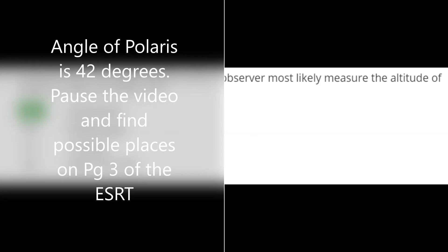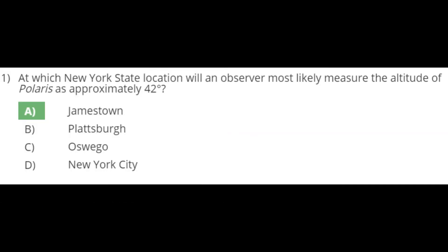So which New York State location will an observer most likely measure the angle of Polaris to be 42 degrees? You look at your ESRT on page 3. Find 42 and you look — I see one, two, three, four different towns and a mountain.